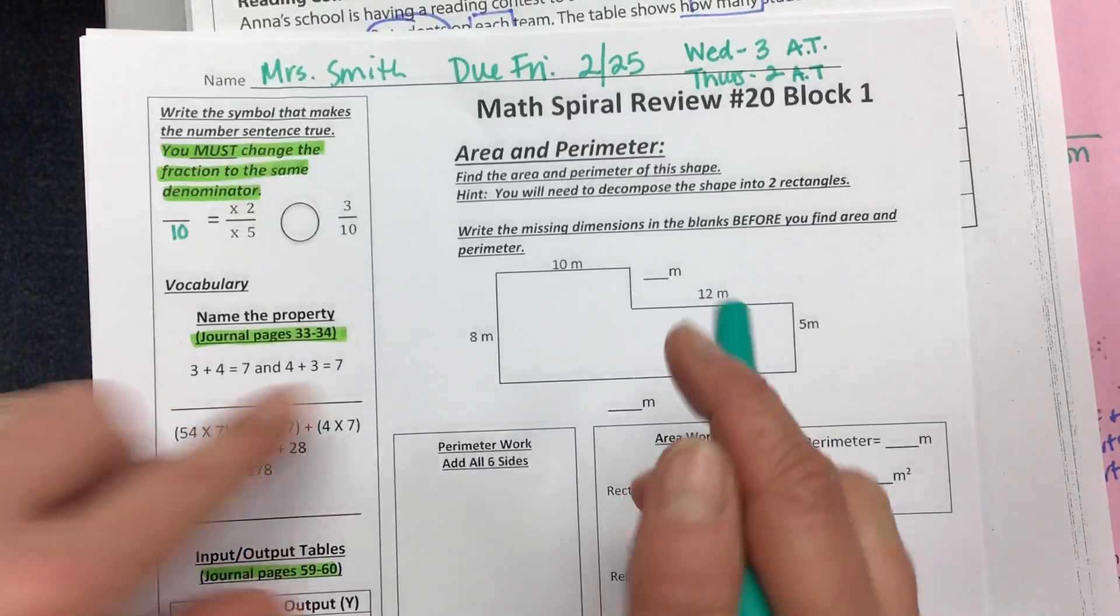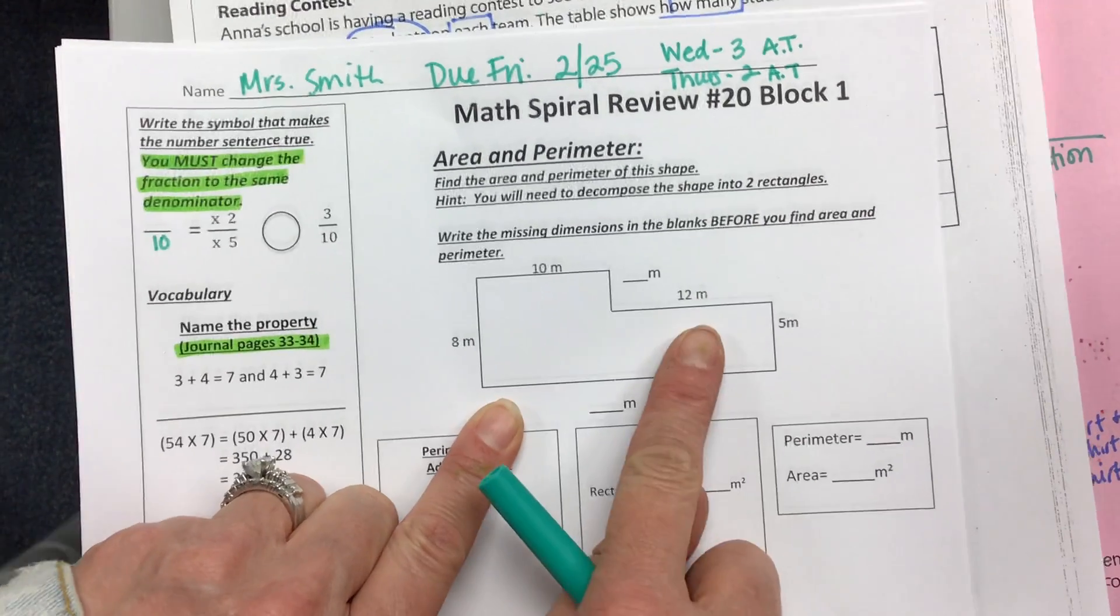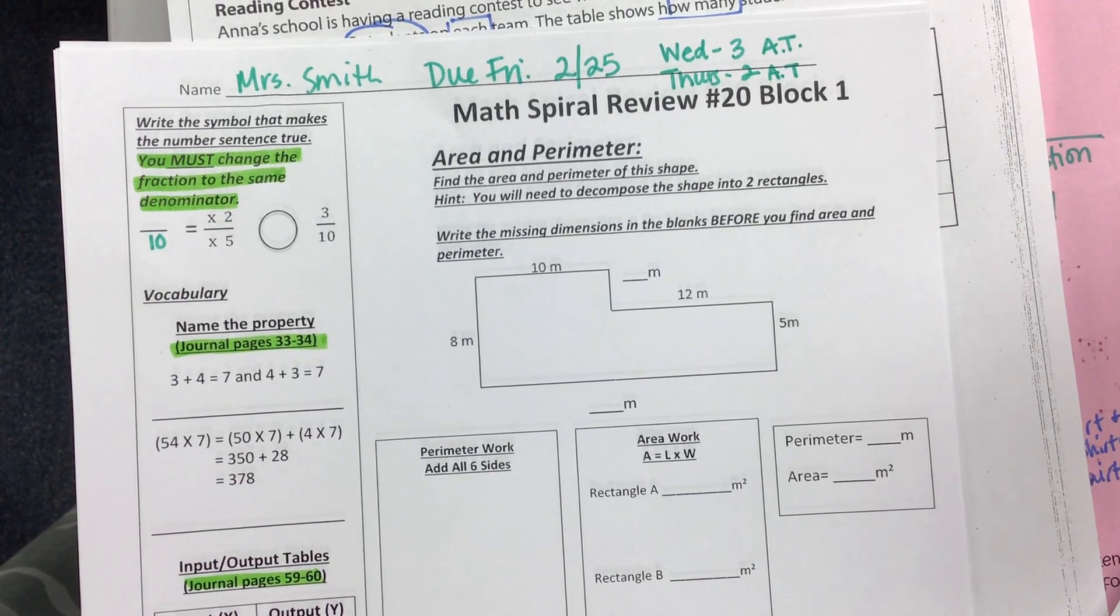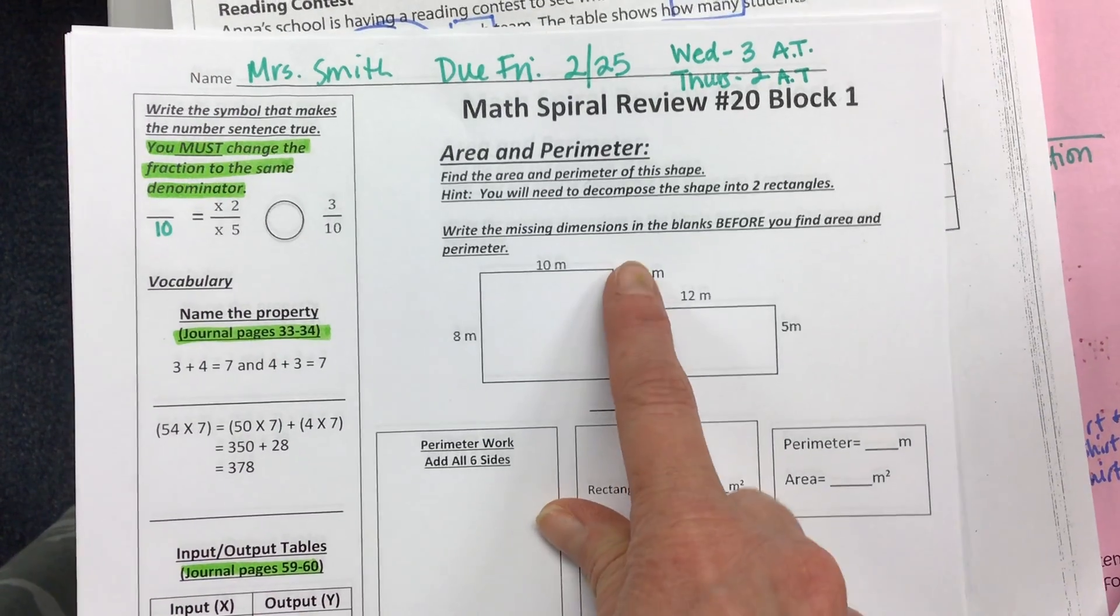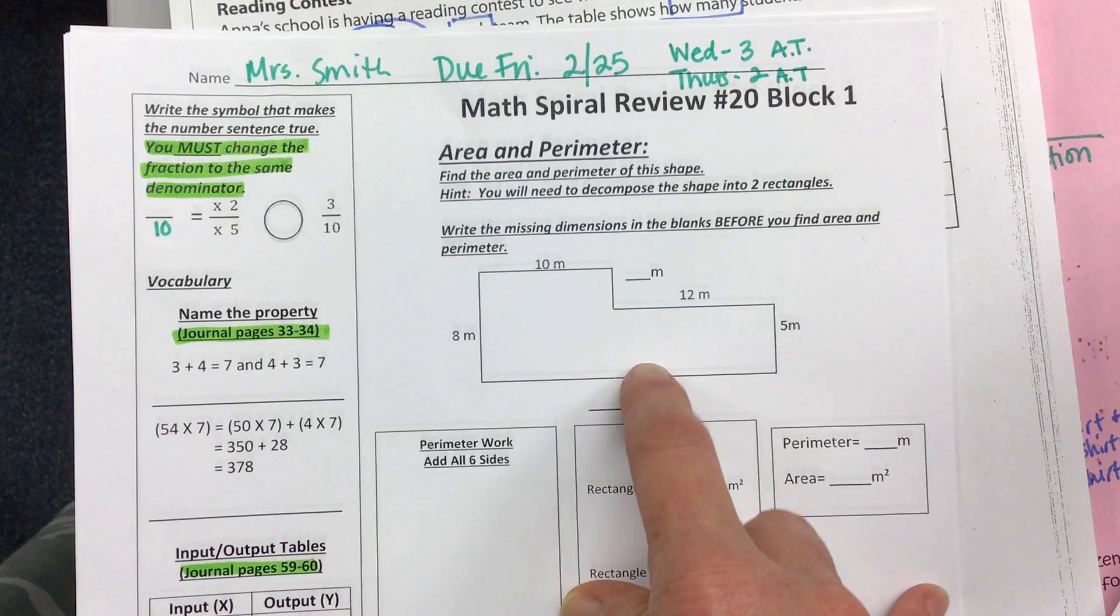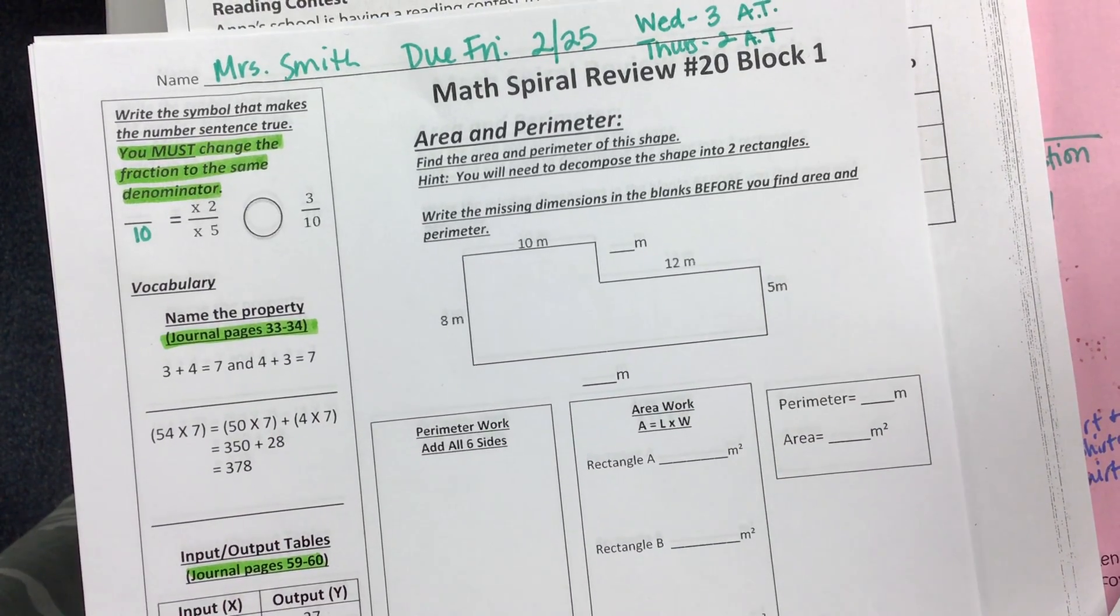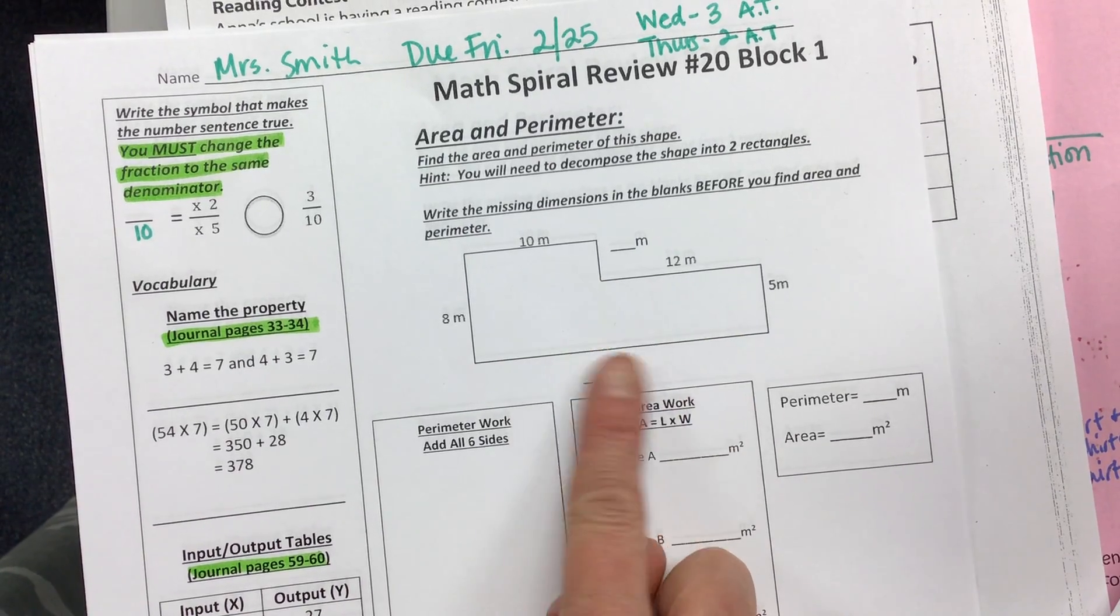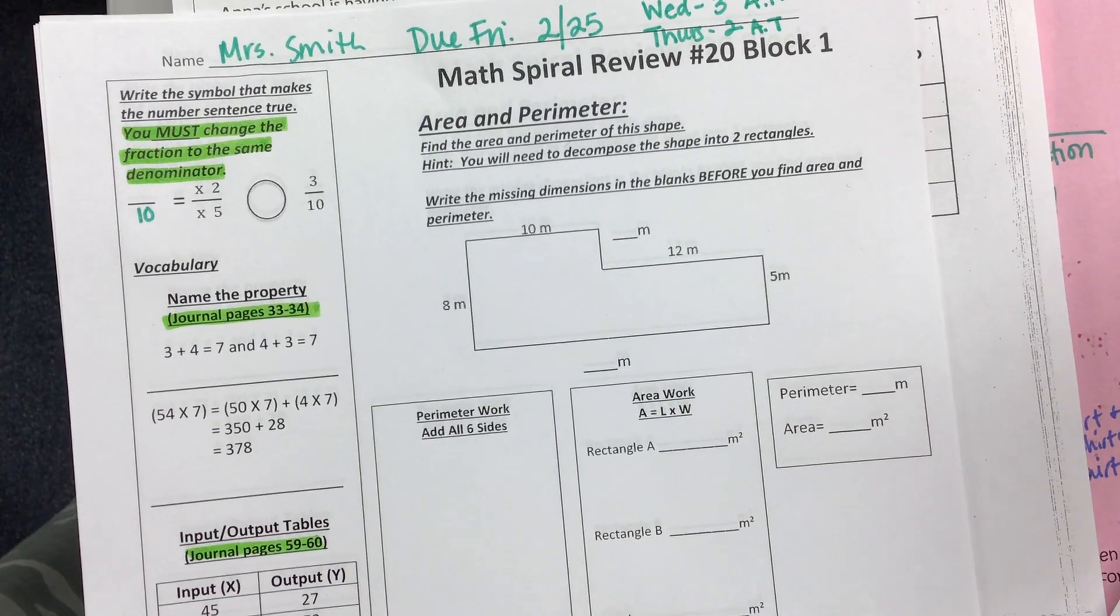Then over here on the top right, we have area and perimeter. There is a rectangle. We have to decompose this into two rectangles. You need to fill in the missing sides, and then you need to find the area and the perimeter. How many sides does a shape like this have? Six. So that's how many sides you should be adding.